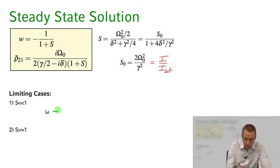And w approaches, the inversion approaches minus one. Minus one, remember the inversion that was just ρ₂₂ minus ρ₁₁.